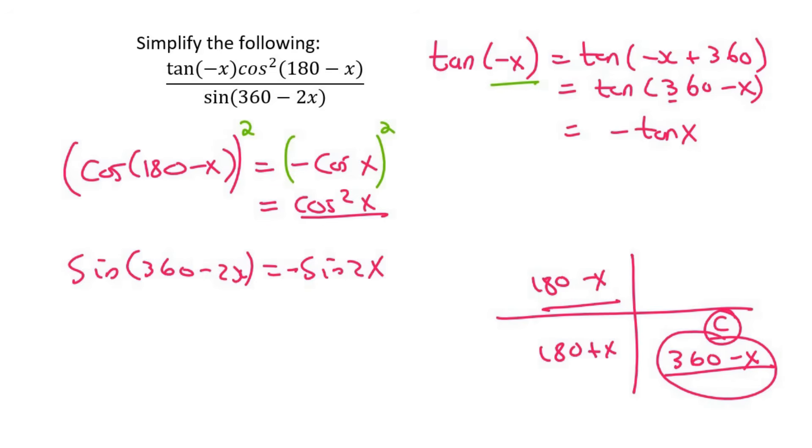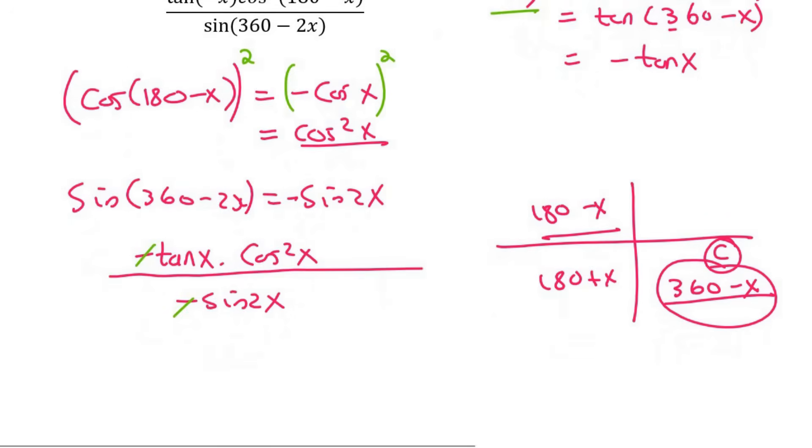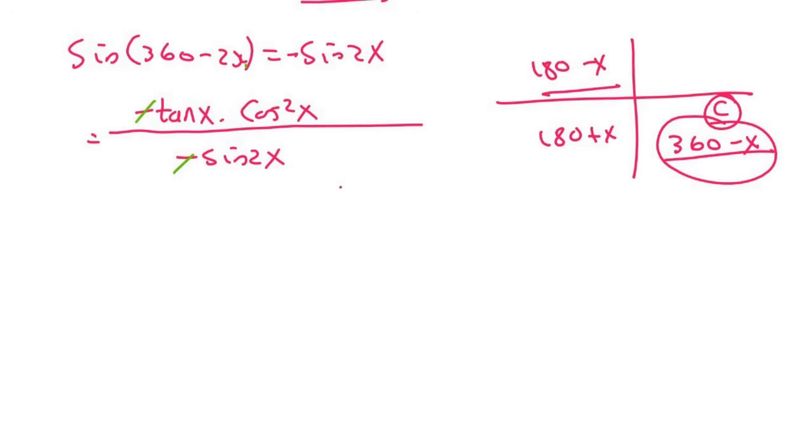And so what we have so far is the following: the tan one became negative tan x, the cos one became cos squared x, and at the bottom we have negative sin 2x. So straight away these negatives are going to cancel, so I'm just going to ignore those. What we like to do is we're always going to switch tan to sin over cos. And tan is always sin over cos.